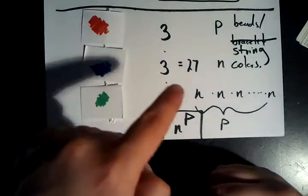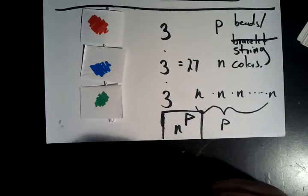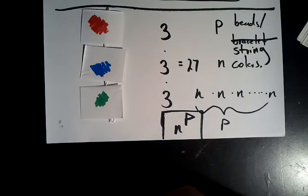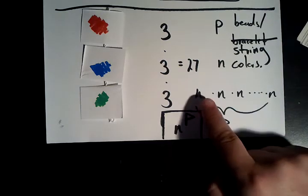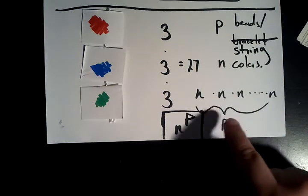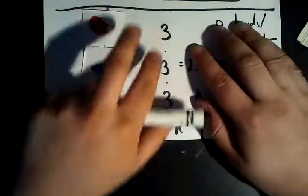Multiply them all together, we get 27 choices of total possible strings. So in general, when we have p beads per string and n colors, we have n times n times n, and there's p of those n's, giving rise to n to the power of p strings. So that's the first part.